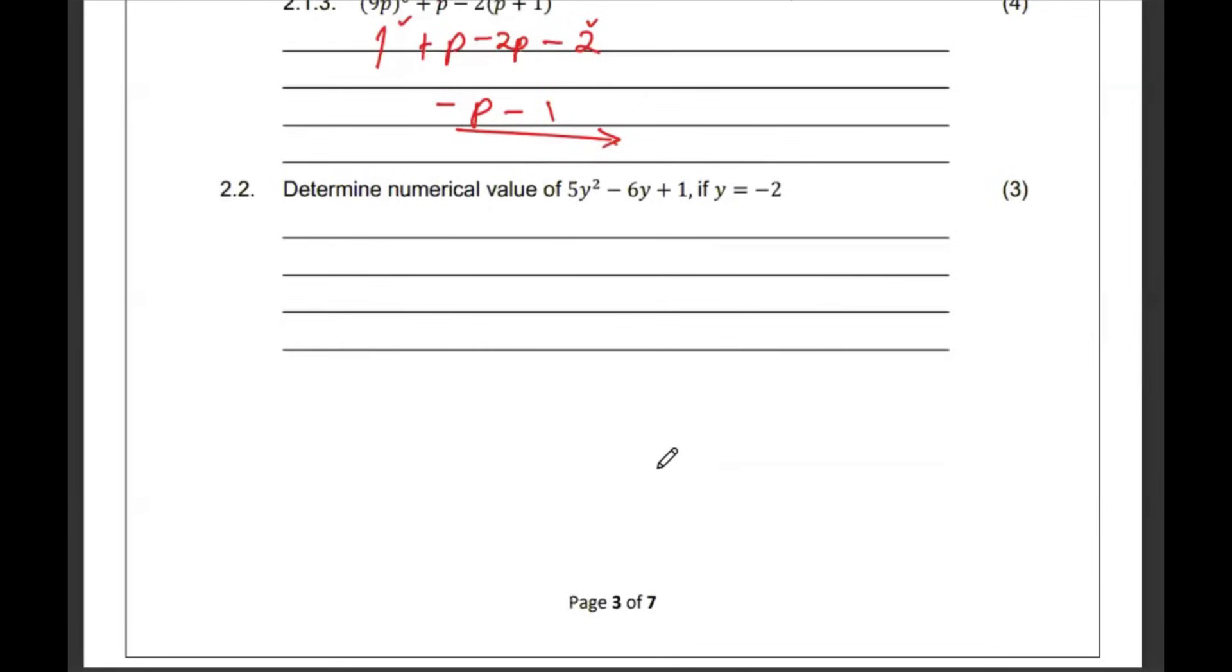Then 2.2. Find the numerical value of this expression if y is negative 2. So, 5 into negative 2 squared, minus 6 into negative 2, plus 1. So, that's a 5 times 4, plus 12, plus 1. So, that is 20, plus 12, plus 1, 33 becomes the answer.